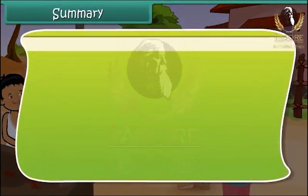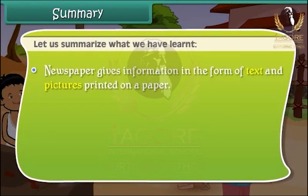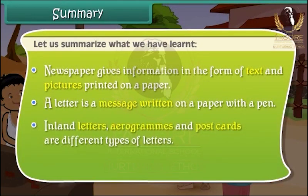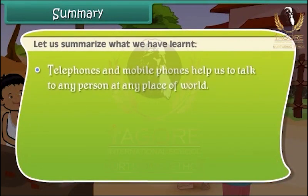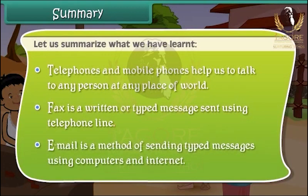Summary: Newspaper gives information in the form of text and pictures printed on paper. A letter is a message written on paper with a pen. Inland letters, aerogram, and postcards are different types of letters. Television helps us to see and hear about world happenings. Telephones and mobile phones help us talk to any person at any place in the world. Fax is a written or typed message sent using a telephone line. Email is a method of sending typed messages using computers and internet.